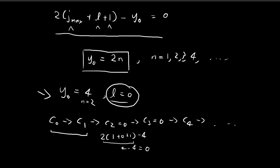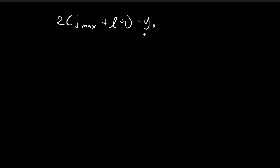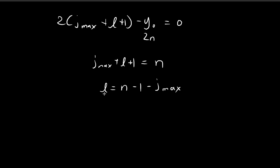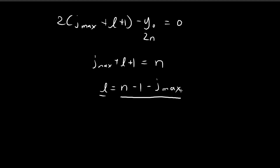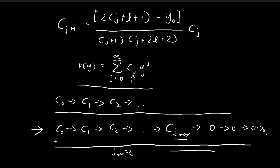Setting this equal to zero gives j_max + l + 1 = n, so l = n − 1 − j_max. For every different choice of j_max — i.e., where you want the chain of coefficients to end — you get a different value of l. The smallest value of j_max is zero, meaning the chain stops immediately: c₀ is the only term and c₁ = 0, so v(y) is just a constant.